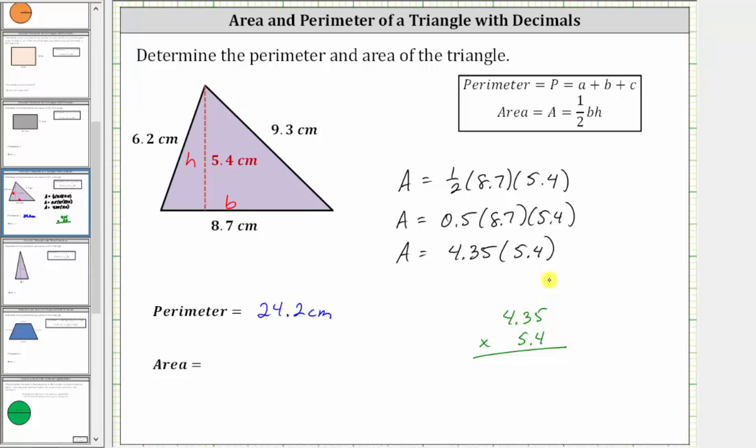We begin by multiplying by four. Five times four is 20. Record the zero, perform an exchange with the two. Four times three is 12, plus two is 14. Record the four, perform an exchange with the one. Four times four is 16, plus one is 17.